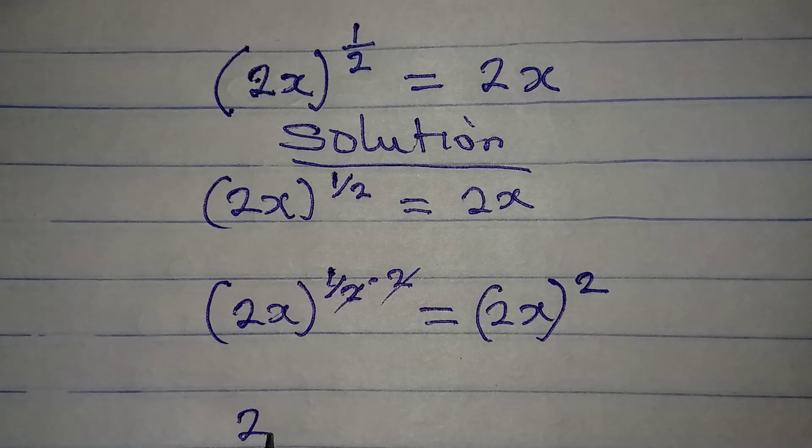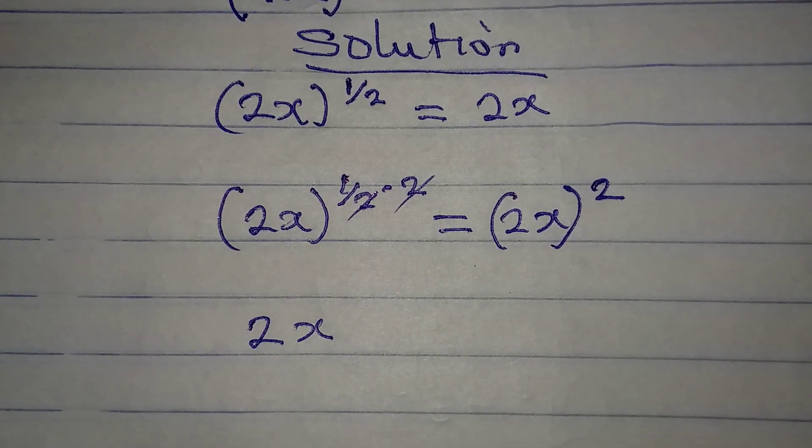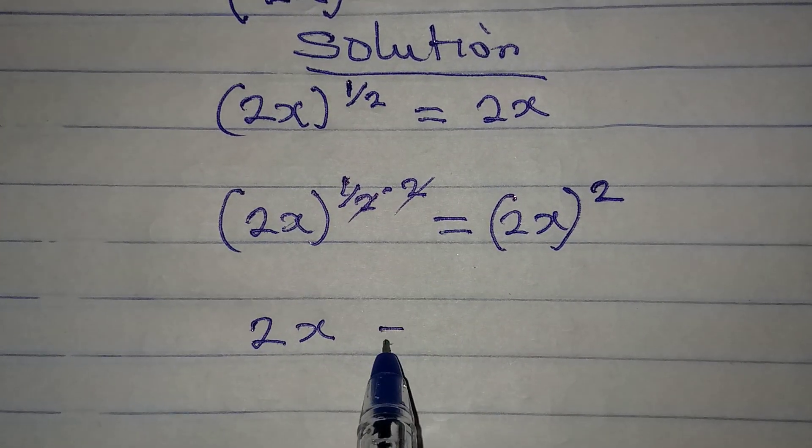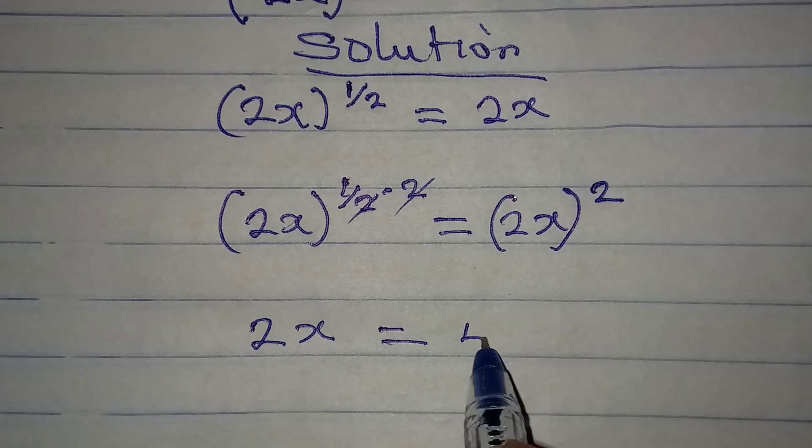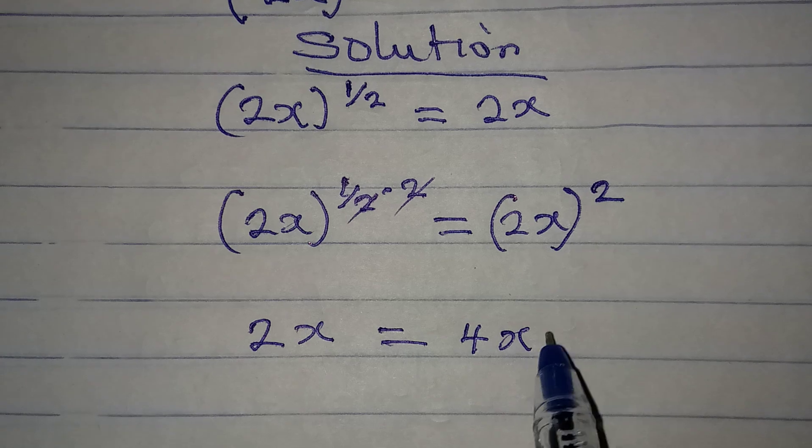This can cancel this, so we have 2x to the power of 1, and that is the same as 2x. So here now we have 2 squared, which is 4, and then we have x squared.